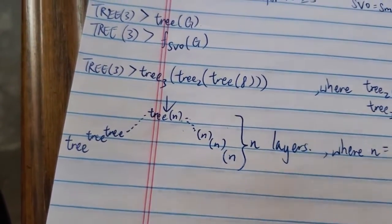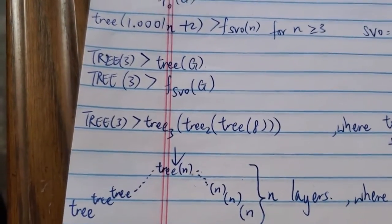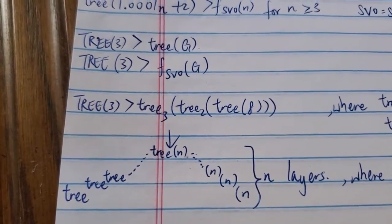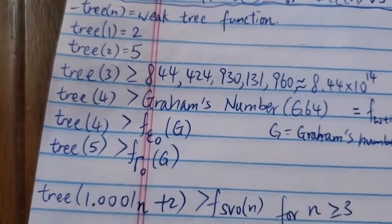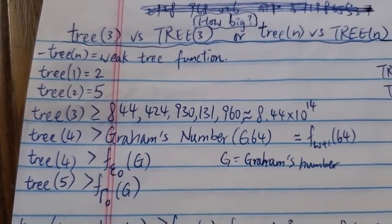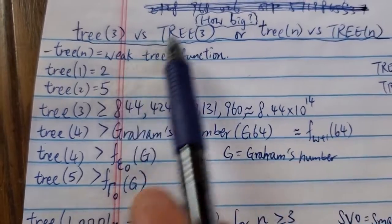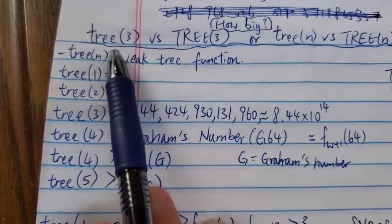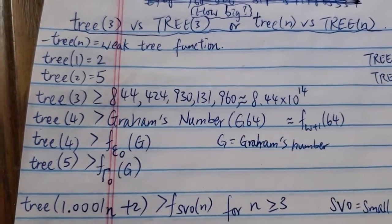That's all from the Googology wiki — I couldn't find any more lower bounds or estimates for either 3-3 or 3-3 (weak and regular). So there we have it — this is all the information I could find online about the values and estimation of how big 3-3 and 3-3 are. Thanks for watching and have a nice day.